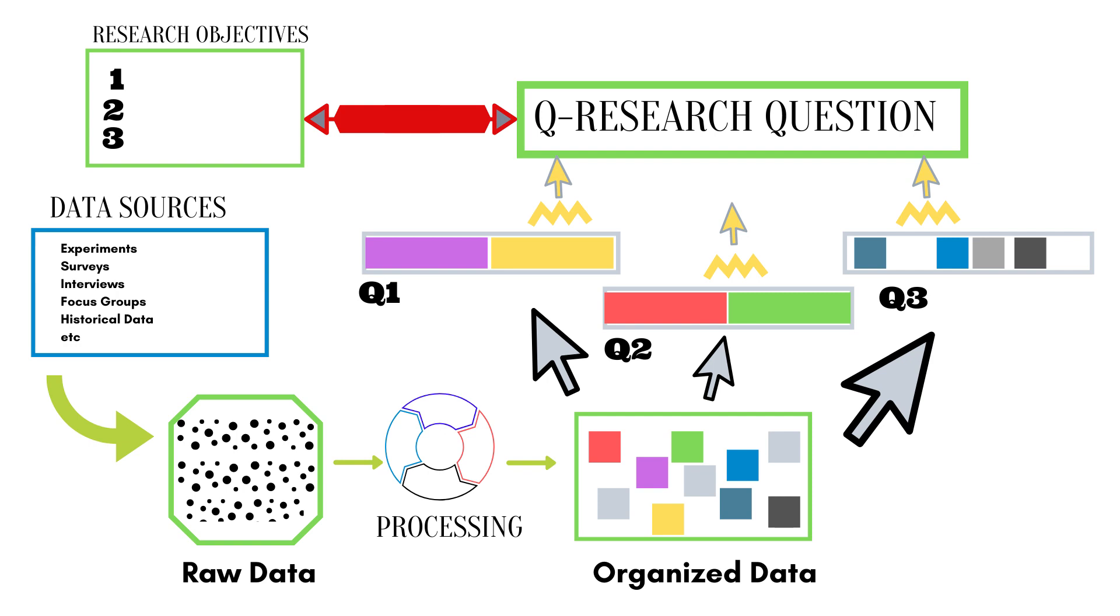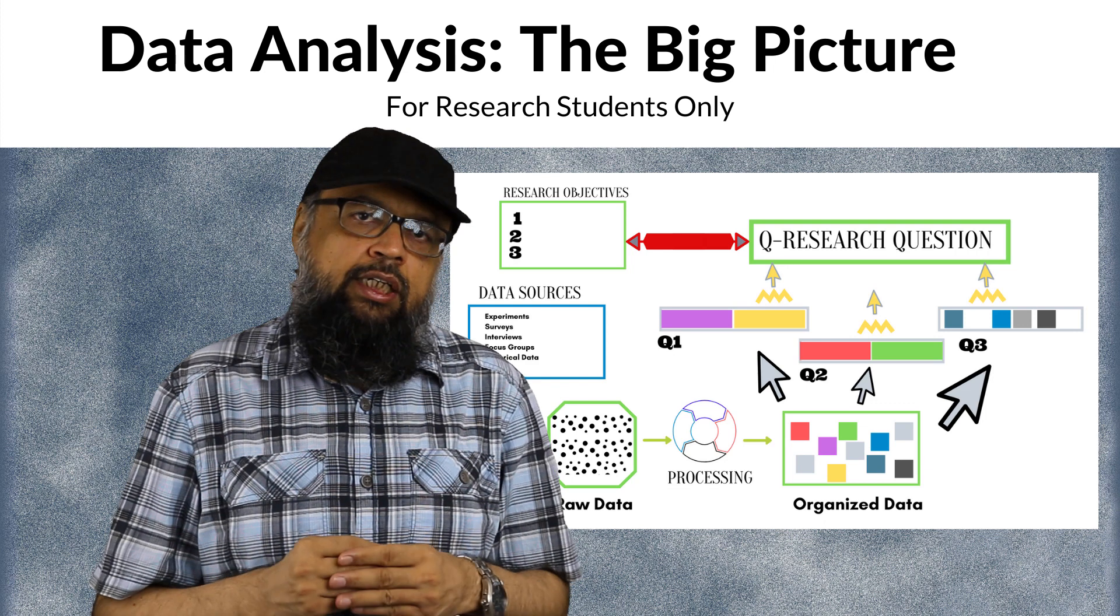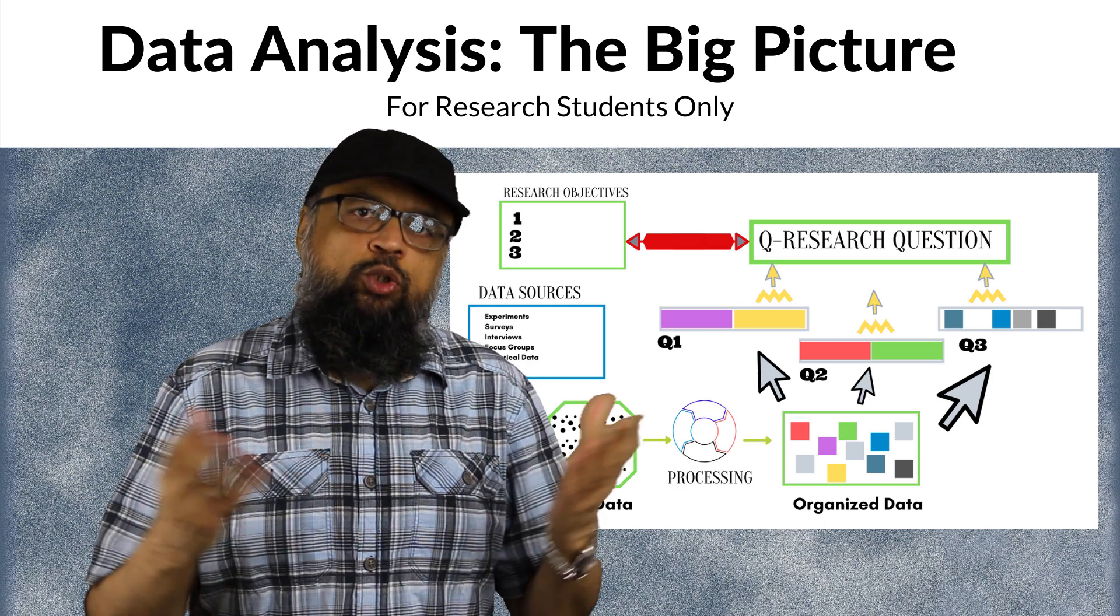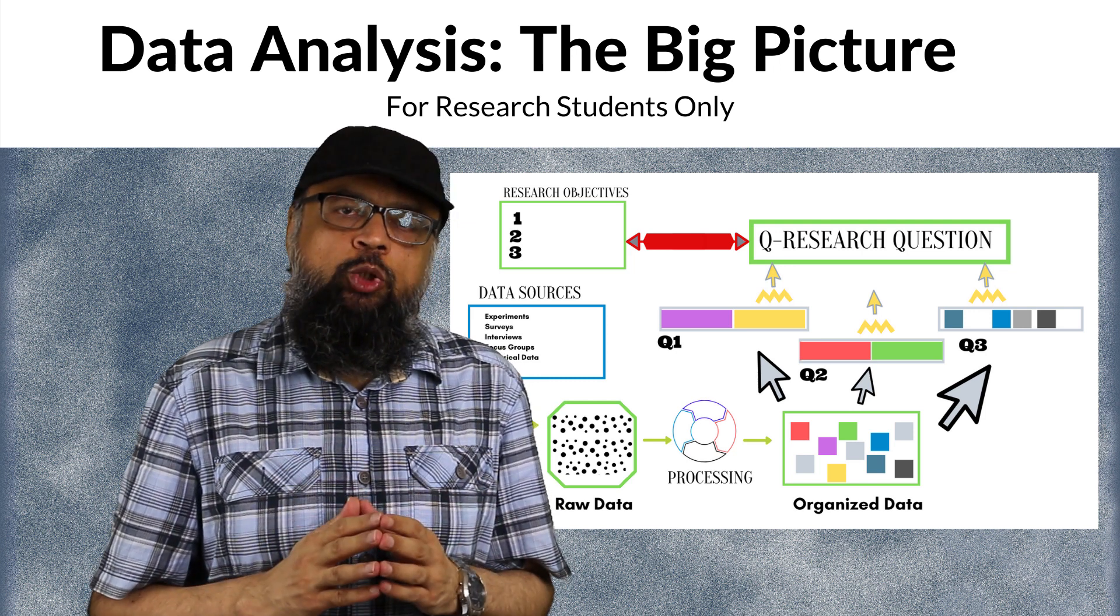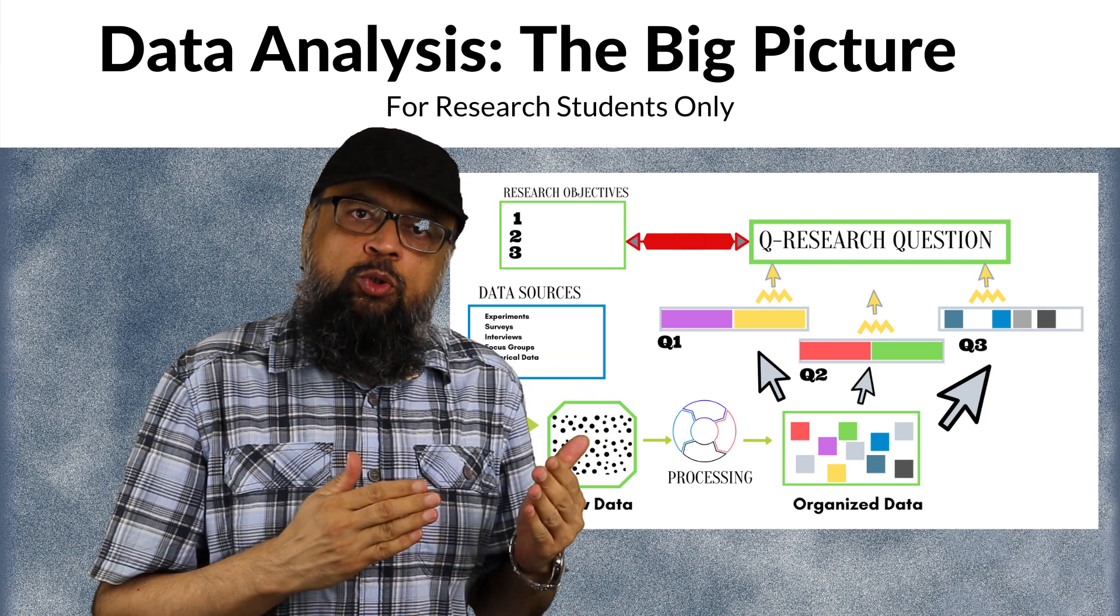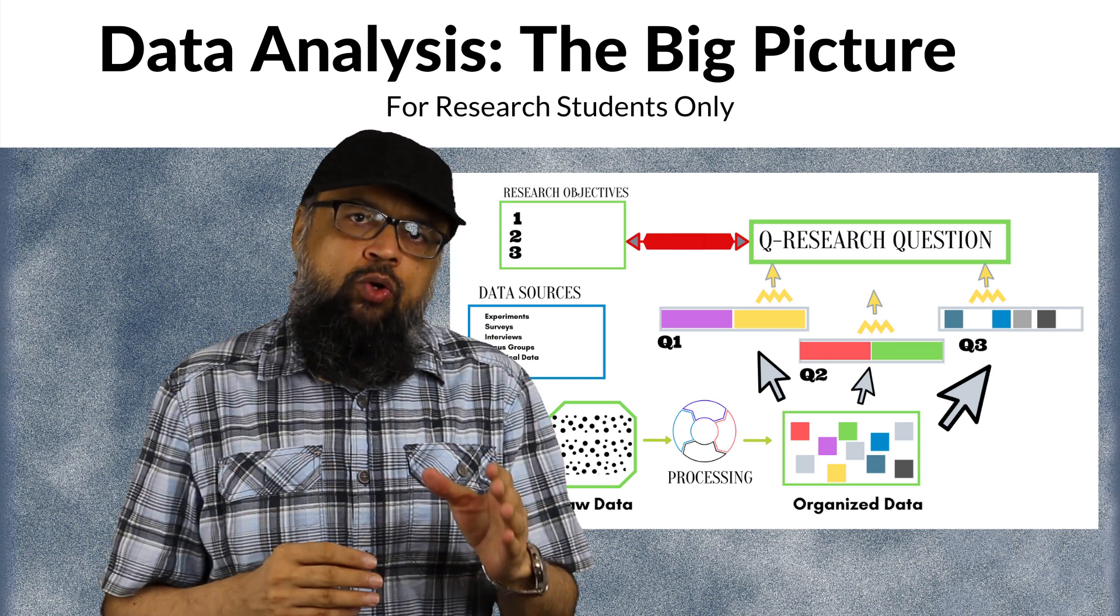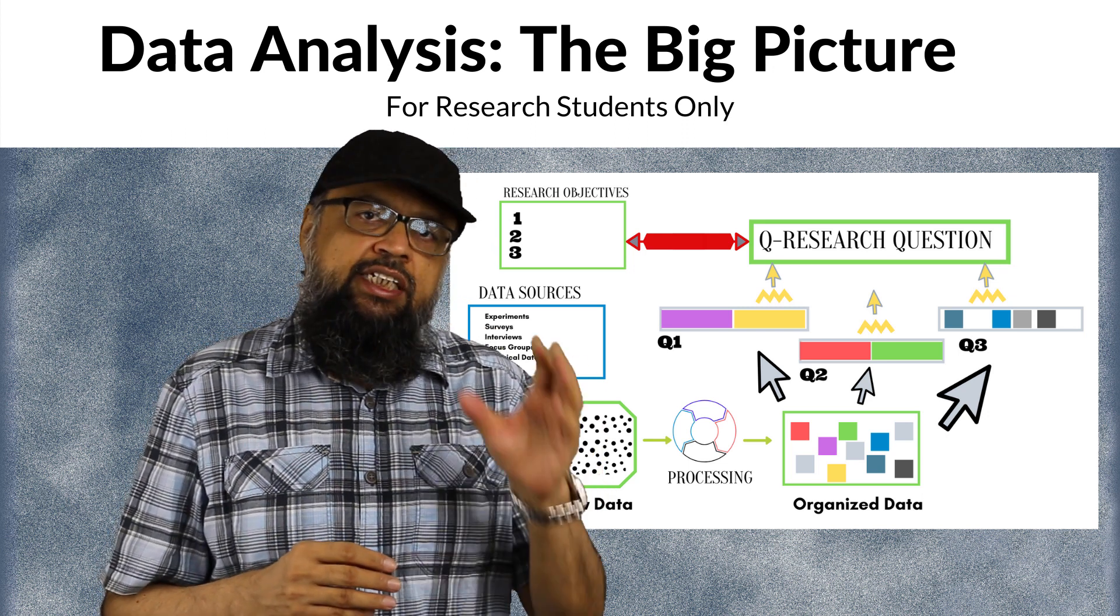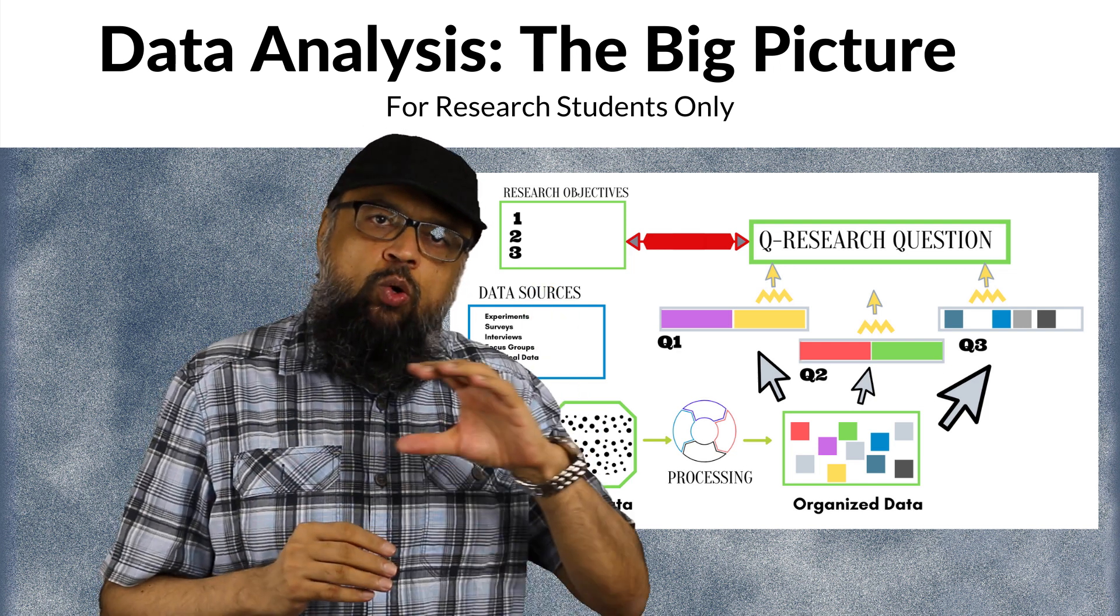First of all, at the top of this diagram, as you can see, I have mentioned research objectives and a research question. So your research objectives must be clear to you. And these research objectives can be more than one, two, three, four, whatever are your research objectives. So the first thing you should make clear that your research question is closely associated with your research objectives. Actually, your research question emerges from your objective of the research. But your research question should be very specific and very focused.